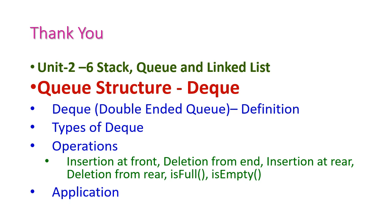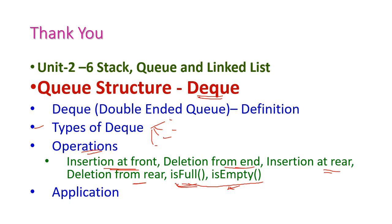So far we have seen the DEQ — double-ended queue. We have seen the definition of DEQ and four types: input restricted, output restricted, DEQ acting as a queue, and DEQ acting as a stack. After that, we have seen six important operations: insertion at front, deletion from front, insertion at rear, deletion from rear, and two operations to check whether the queue is full or empty. We also covered the applications of DEQ. In the next class, we will see another important topic from the second unit. Thank you.